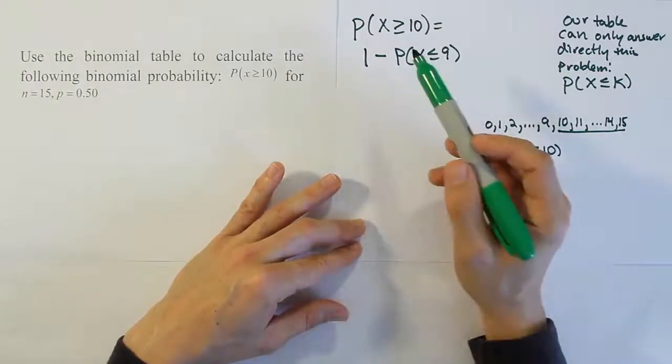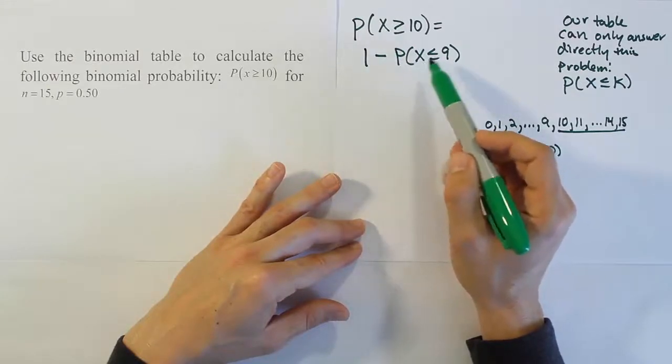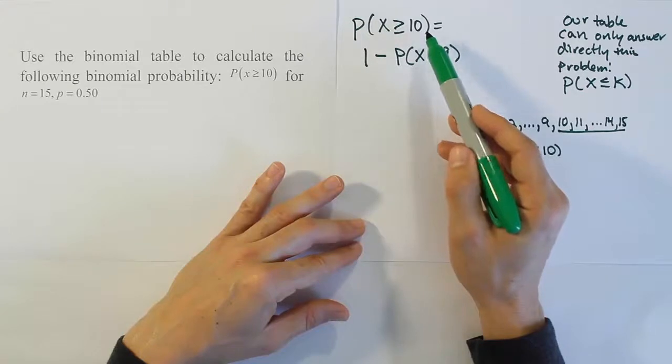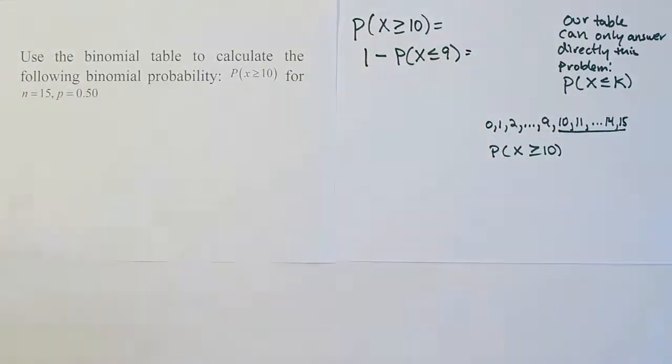In this particular problem, though, because it's greater than or equal to, the trick is 1 minus the probability of x is less than or equal to one number less than the number you have here. So in this case, 9. Alright, so if that makes sense to you, then let's go to our table.